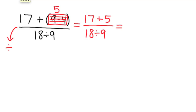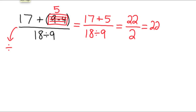So now we can just figure out what we have in the numerator and figure out what we have in the denominator. In the numerator, we have 17 plus 5. 17 plus 5 is 22. We still have our fraction bar. And in the bottom, we have 18 divided by 9, which is 2. Now this is really a division problem: 22 divided by 2. When you divide, you have to think, 2 times what gives me 22? Well, 2 times 11 will give you 22. So 22 divided by 2 is 11.